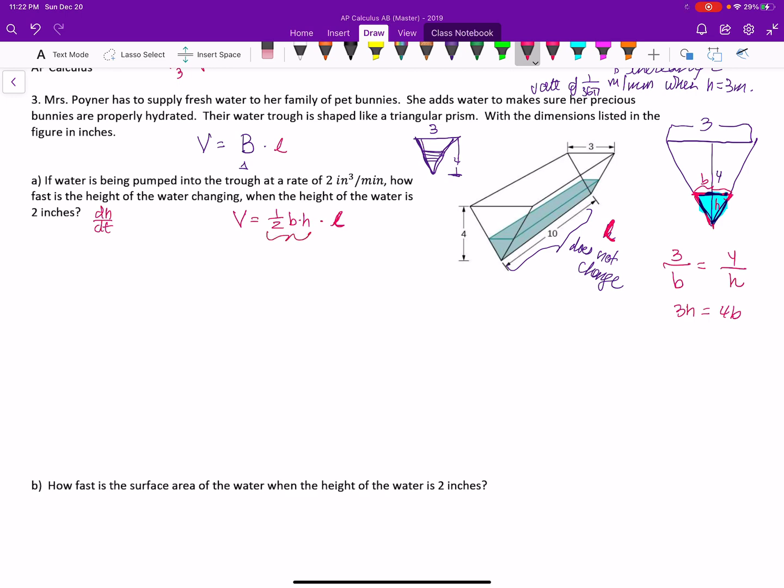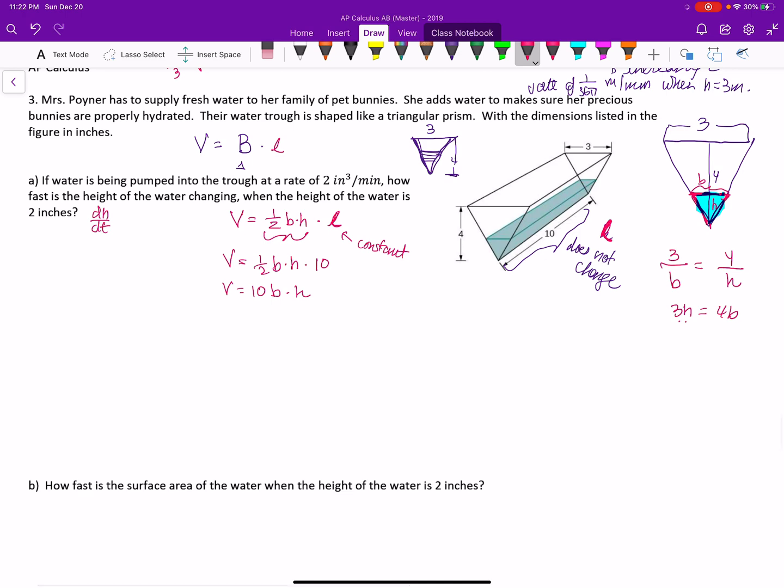It's the area of the base times the length or the height of the triangular prism. In this case, that part is constant. That part doesn't change. So volume is then going to be 10 times one half base times height, so the volume is 10 base times height. But I have a relationship between the base and the height, which is 3H is equal to 4B.